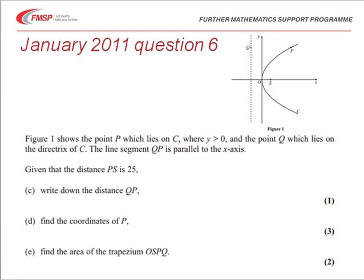We're then told that PS, the distance of P to the focus, is 25, and we're asked to write down the distance QP, find the coordinates of P, and finally to find the area of the trapezium OSPQ.